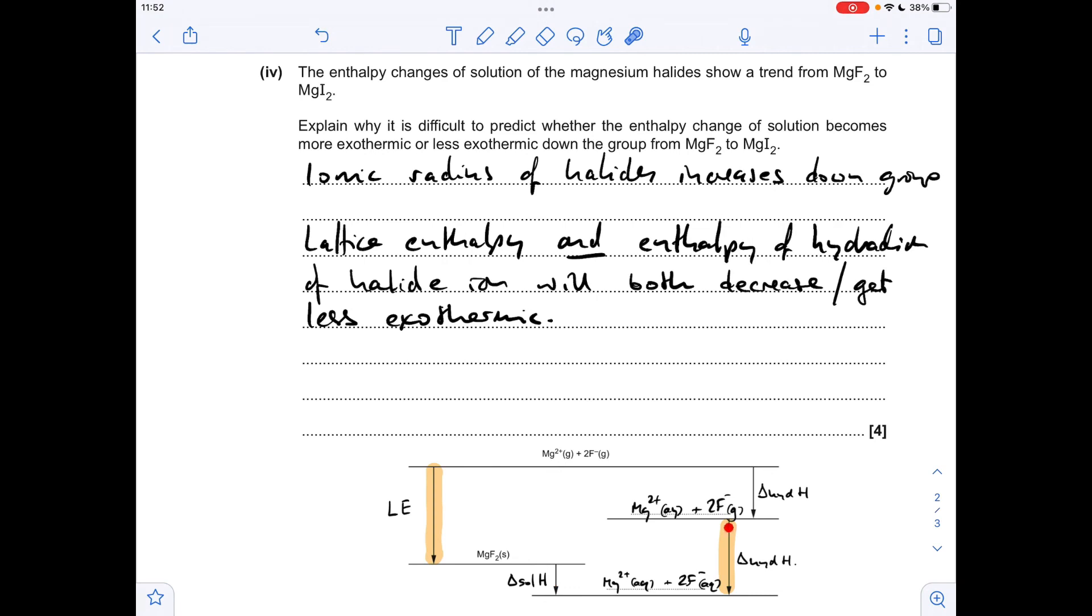If, however, the hydration enthalpy was affected more, so this arrow shrinks more than this one, it's obviously going to pull the bottom line up and it's going to shorten the enthalpy change of solution and make it less exothermic. So why is it difficult to predict whether the enthalpy change of solution gets more or less exothermic? It's basically because we don't know which of these has the most significant effect.